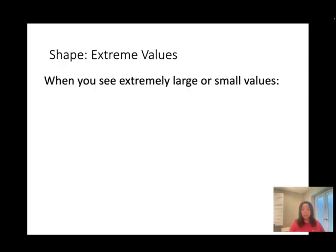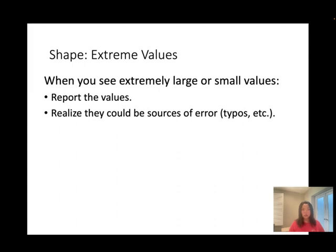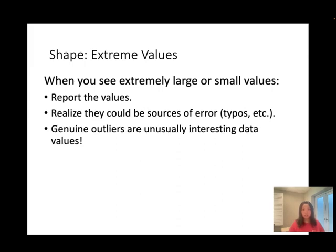When you see extremely large or small values, report those values and realize they could be a source of error — for example, typos. You may have intended to enter 250 but typed 520 instead. However, outliers can also be genuinely unusual but true data values — they actually happened and are valid data points.